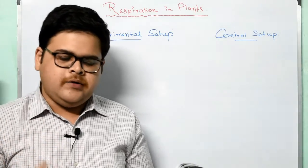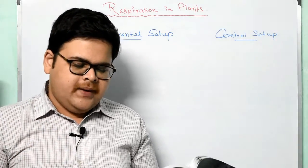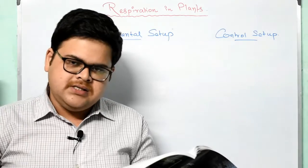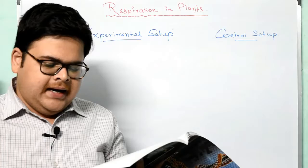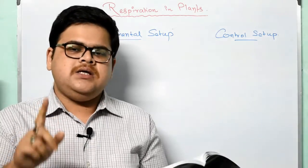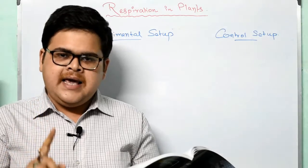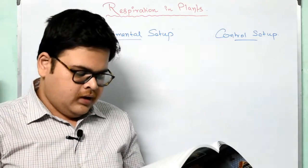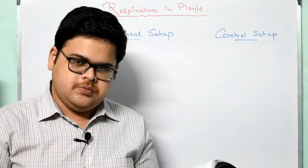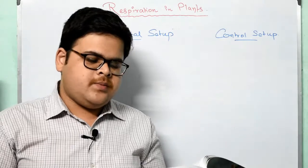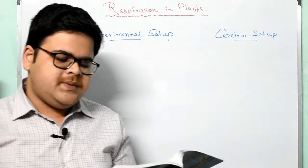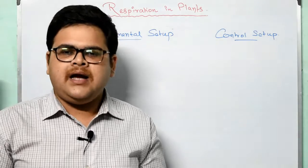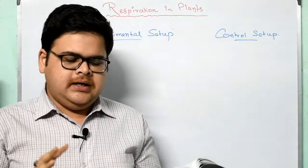Experiment to prove that oxygen is used up in respiration. We will be taking two flasks. In flask A, we will be keeping germinating bean seeds, and in flask B, we will be keeping dead bean seeds. Flask B is the control and flask A is the experimental setup. We will be keeping soda lime solution in both test tubes. Flask A contains germinating bean seeds and flask B has dead or boiled seeds, together with some antiseptic such as carbolic acid to avoid bacterial decay.